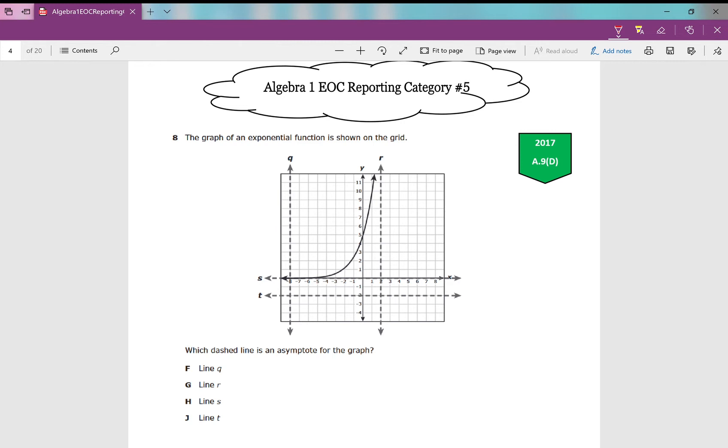Number eight, this is the 2017 version. The graph of an exponential function is shown on the grid. Which dashed line is an asymptote for the graph? An asymptote—a line that the graph will forever approach and never ever ever touch or cross it. Which one is an asymptote? The asymptote that we look at in Algebra 1 in the state of Texas is just this x-axis, the line y equals zero. That right there is going to be H. Every other dashed line on here is not an actual asymptote for this exponential function.